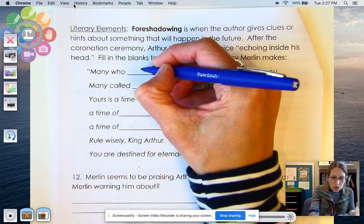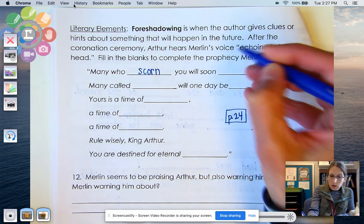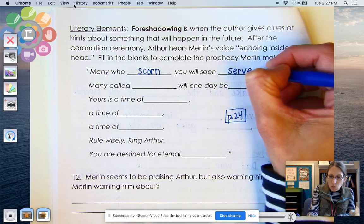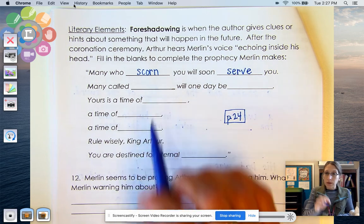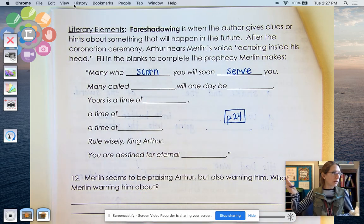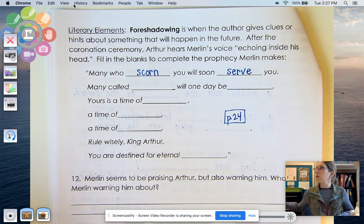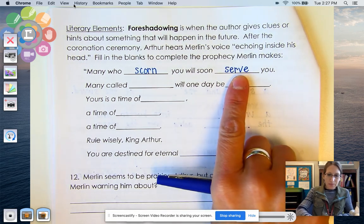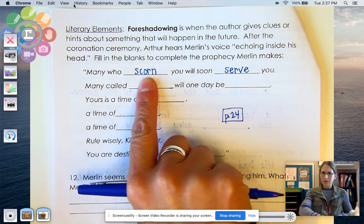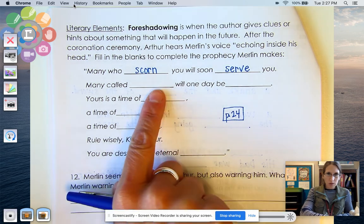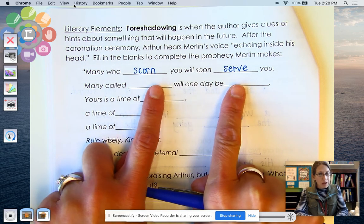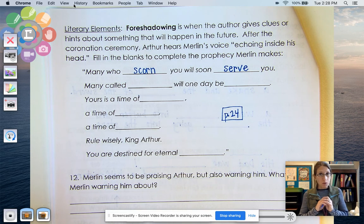Many who scorn you soon will, will soon serve you. Oh, and if someone scorns you, it's kind of like they don't want to listen to what you have to say. Oh, it's sort of like, get out of here. I'm not going to want anything to do with you. So it's sort of the opposite of this one. So if you serve someone, the opposite of that would be to scorn them. Like, I'm not serving you. I'm not helping you. Okay. Many called friends will one day be enemies. So those are also opposites. So Merlin is predicting that there's some strange stuff that's going to happen in the future. So a prophecy is like a foretelling of the future.